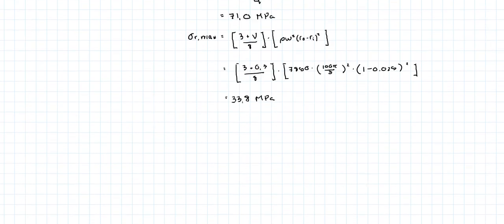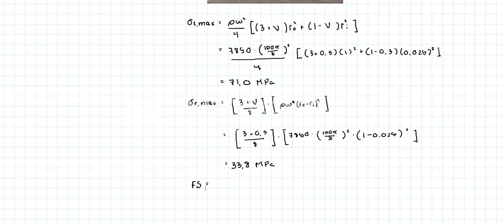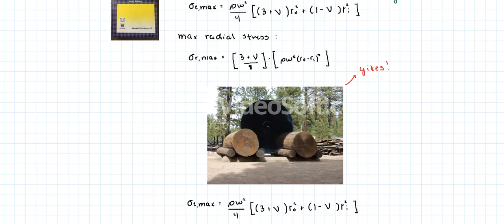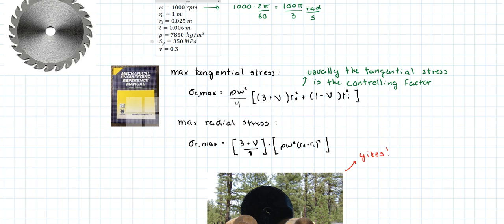So let's find the safety factor. So we have 71 and the yield strength is 350.